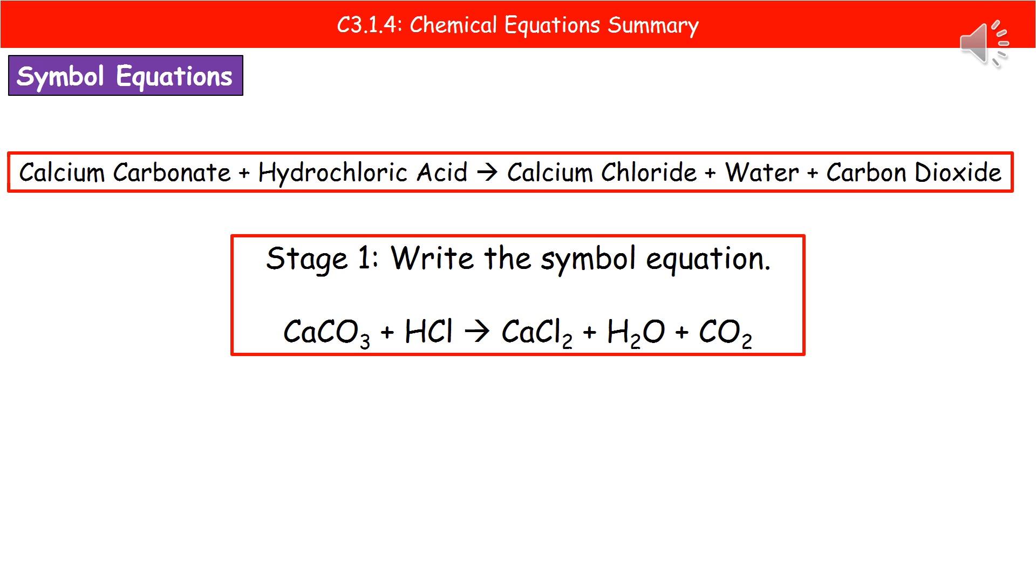So how do we balance chemical equations? The first thing to do is write the symbol equation without thinking about balancing it. In the example we've got here, we've got calcium carbonate reacting with hydrochloric acid, and we're going to make three products: calcium chloride, water, and carbon dioxide. So we're going to just change those into the symbols. CaCO3 is our calcium carbonate, HCl is hydrochloric acid, calcium chloride is CaCl2.